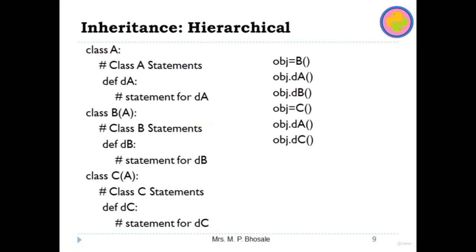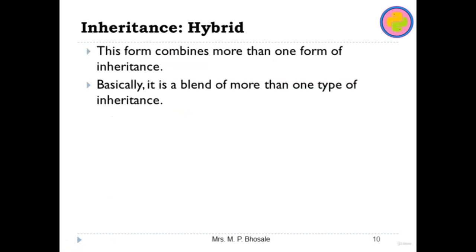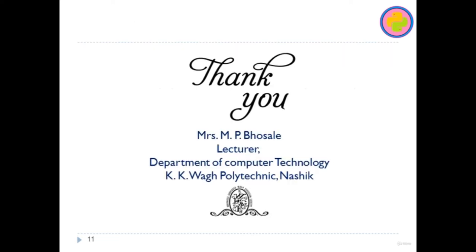The next type is hybrid inheritance, which includes a mixture of all the types of inheritance. It combines more than one form of inheritance and is a blend of more than one type. I hope you have understood the concept of inheritance in Python and can implement programs for it. Thank you.